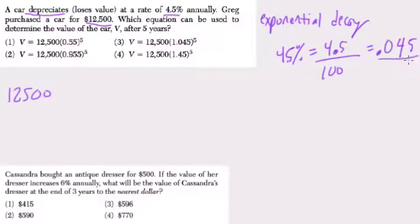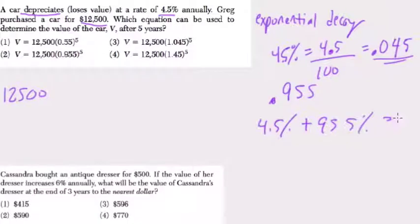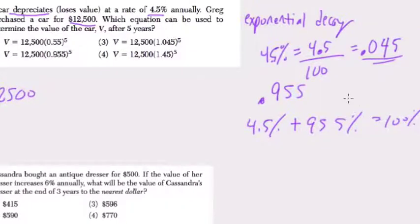So every year, we lose this much. The idea being, then, that your new value is always 0.955 of your original value, or 95.5%. The idea is that 4.5% plus 95.5% equals 100%. So we're always taking into account, when I look at 95.5%, I knew to use that because we lost 4.5%. That means we have 95.5% of our original value.